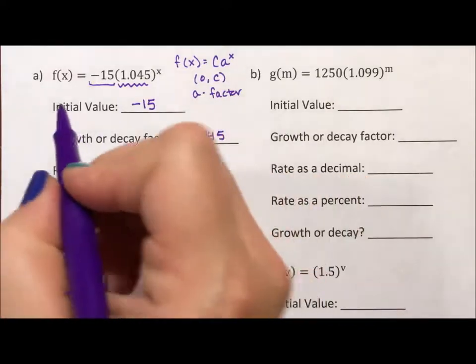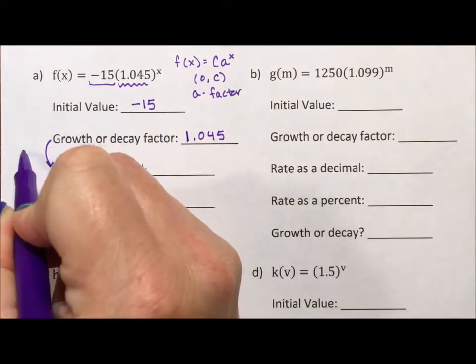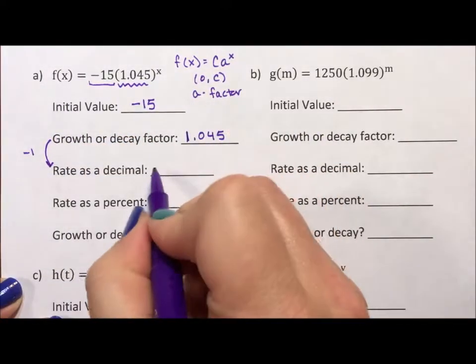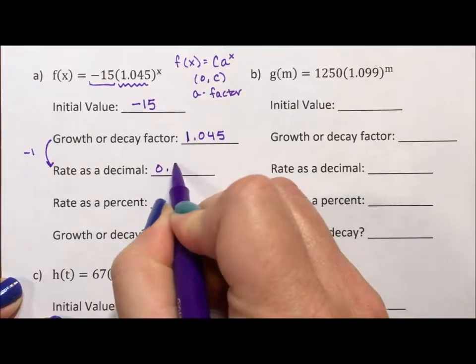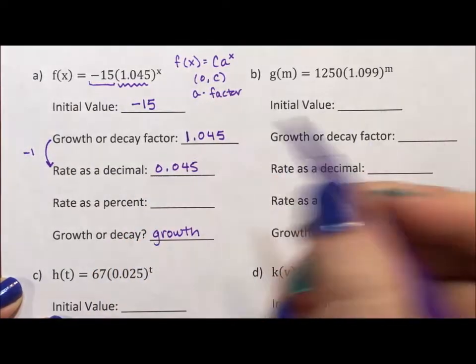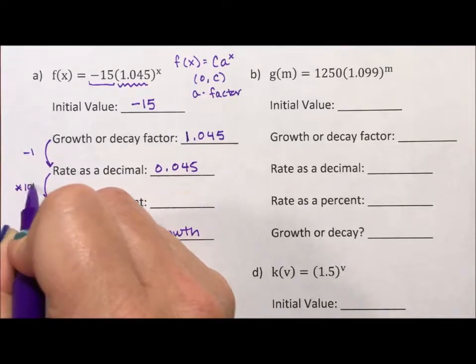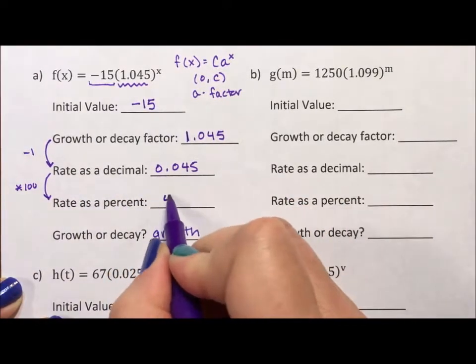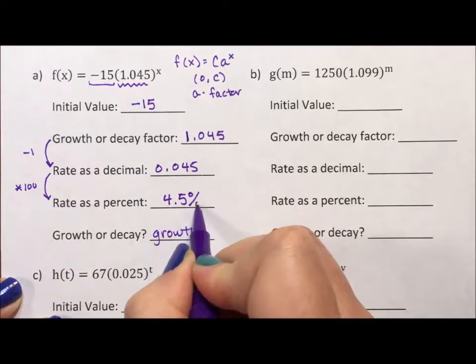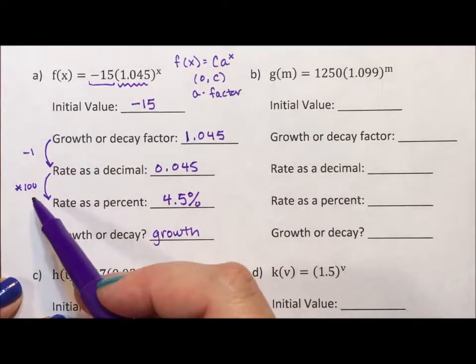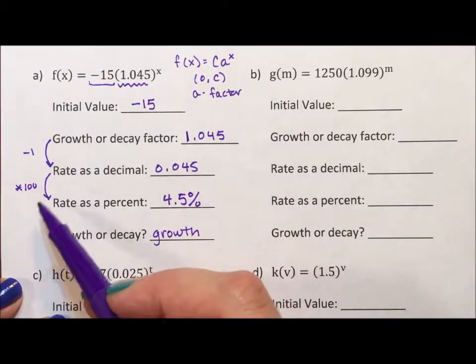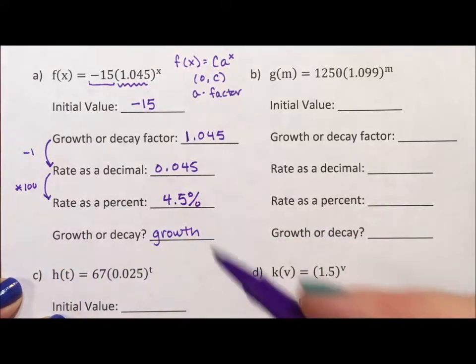To go from your factor to your rate as a decimal, you subtract 1. If I subtract 1 from here, I get 0.045. And then to go from decimal to percent, we multiply by 100, and we get 4.5%. This minus 1 times 100 is almost the end of the story for how we move through these.